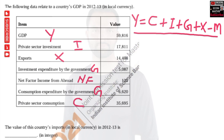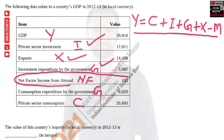Now let us see what things are included here. We have private sector investment, which is used for calculating GDP — yes, that is true. Exports is also used. Investment expenditure is also used. Now, this net factor income from abroad is not part of GDP.